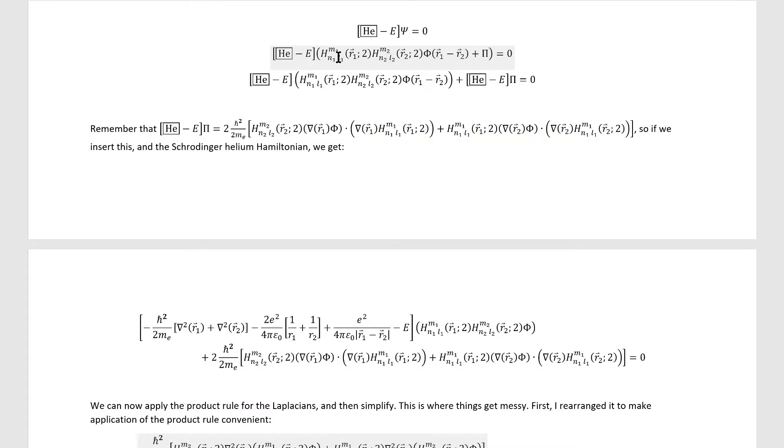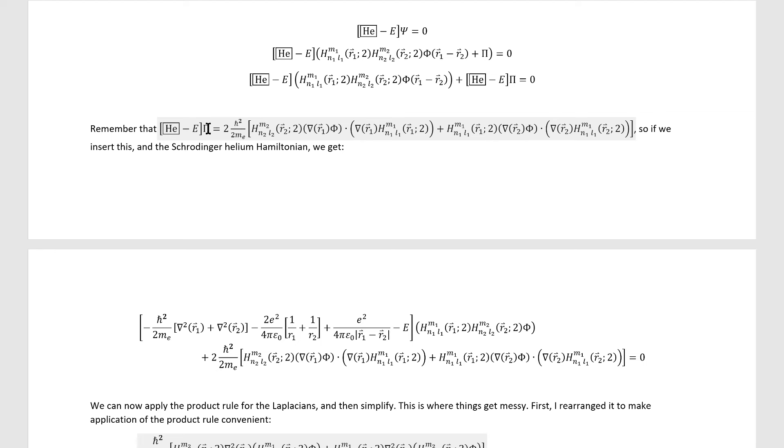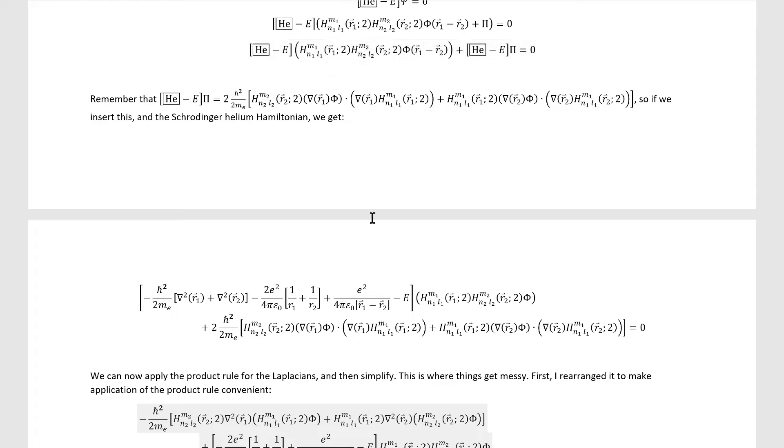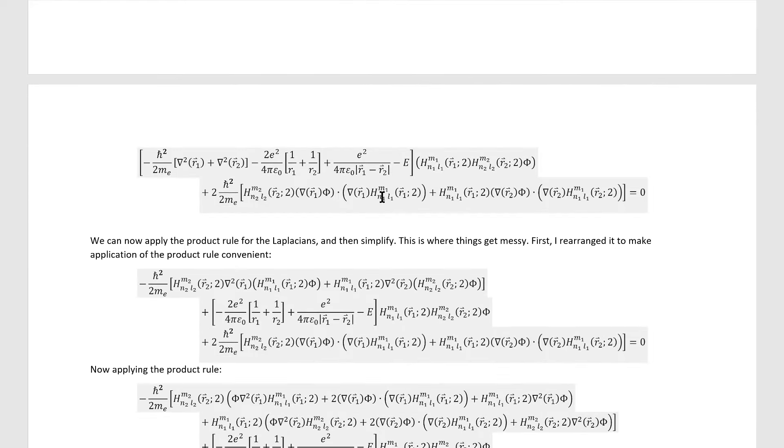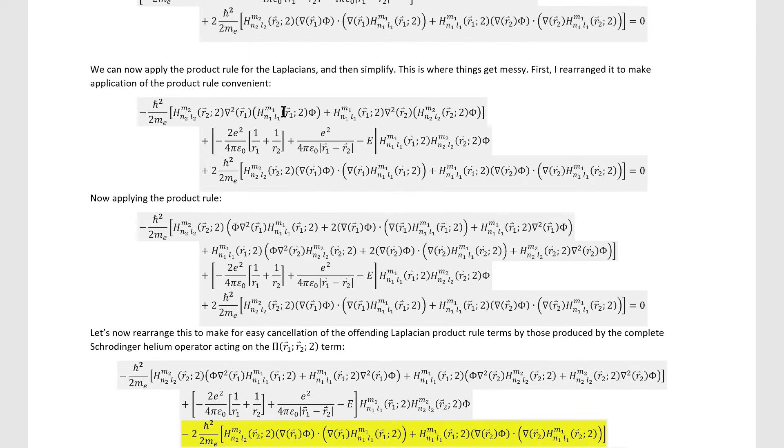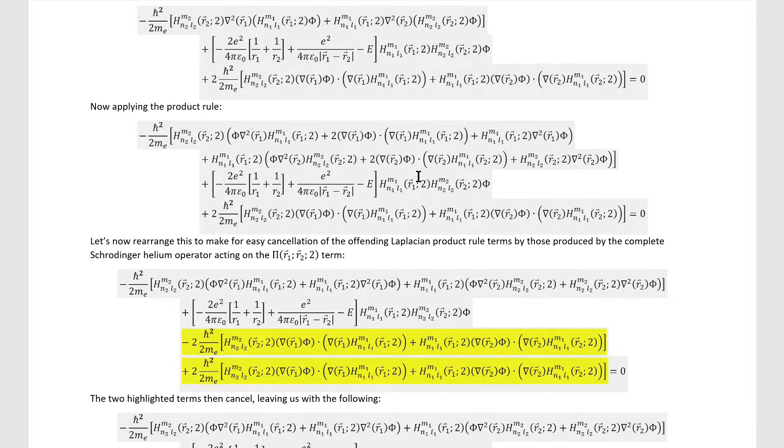So here we have the Schrödinger equation for the helium atom with my ansatz inserted in. We can distribute across those two terms in the ansatz, and then remember this identity, which is the one that I was just explaining, and it works because of the Green's function and convolution integral that this pi quantity contains. If we apply this identity to this equation here, we're left with this seemingly messier equation, but we're actually on our way to that cancellation we need. The next step is to apply these Laplacian operators to this first term here. To make that easier, I set up like this, and then I applied the product rule for the Laplacian itself and got this messy result.